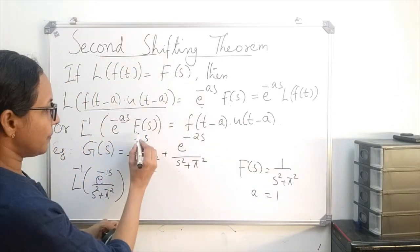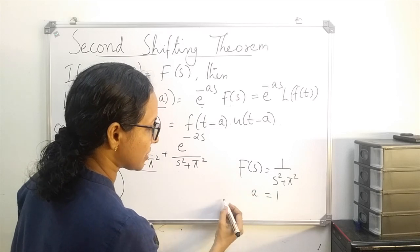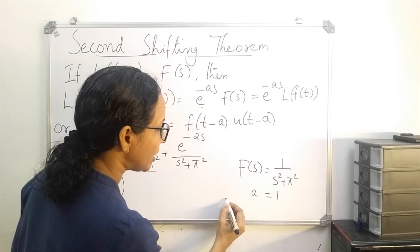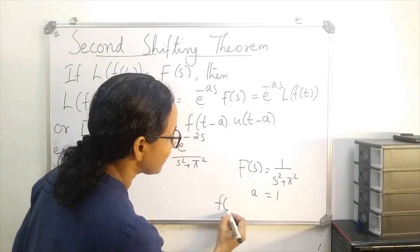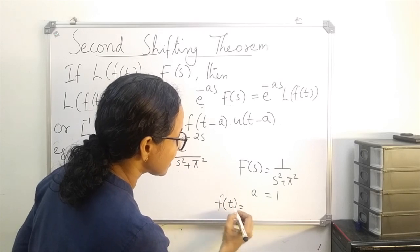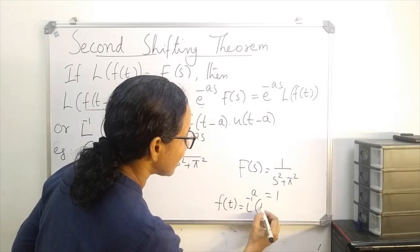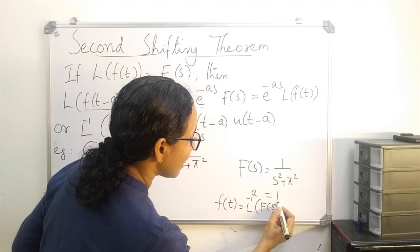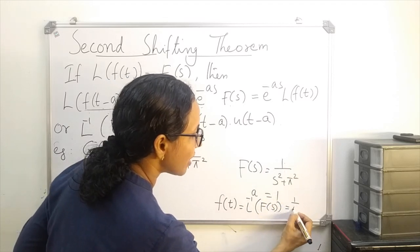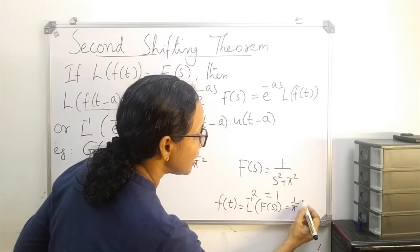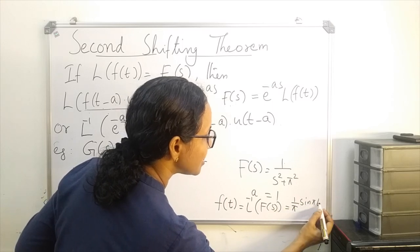Now I will find the inverse Laplace of f of s. We know the inverse of f of s, that is f of t. So f of t equals the inverse Laplace of f of s, and the inverse of 1 divided by s squared plus pi squared is 1 over pi times sin of pi t.